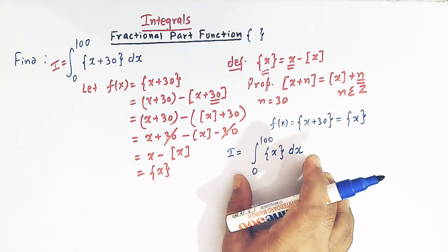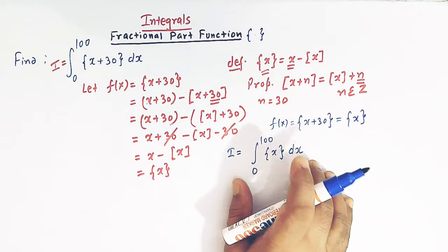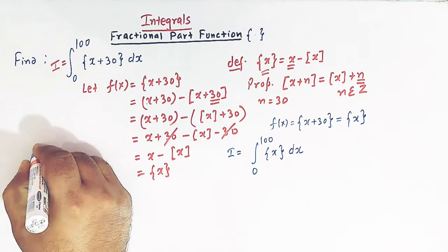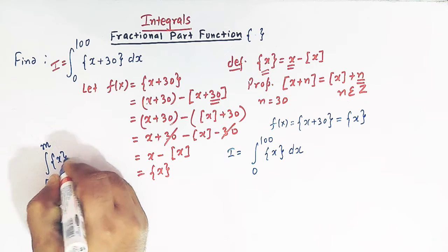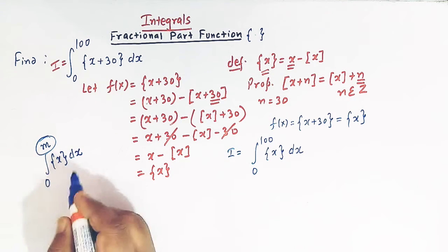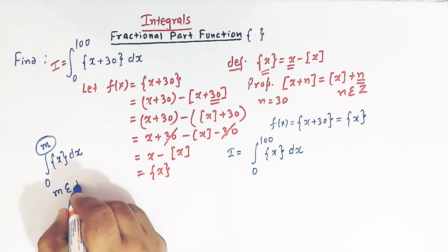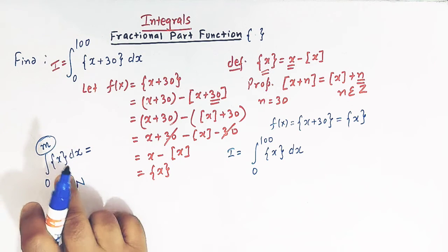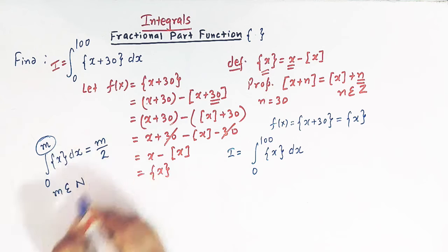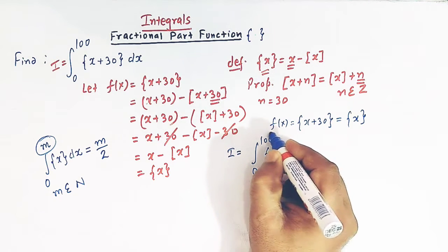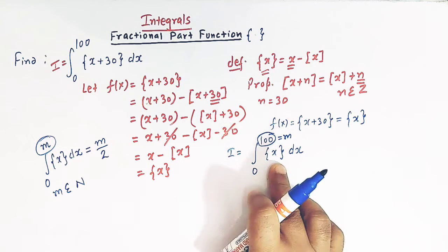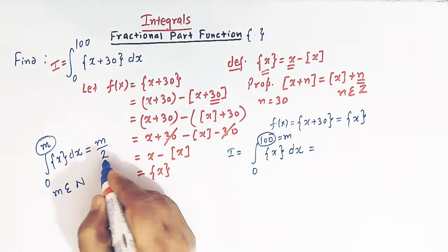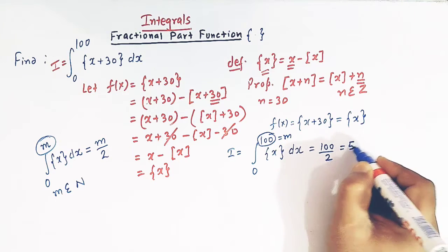Now we will make use of one direct result. If we have an integral of the type from 0 to m of the fractional part of x, where m belongs to the set of natural numbers, then the direct result for these type of integrals is simply m divided by 2. Here the value of m is 100, and this integral matches that form, so the direct value is m over 2, that is 100 over 2, that is 50.